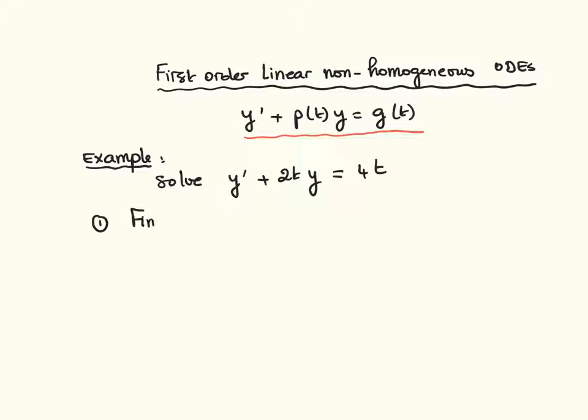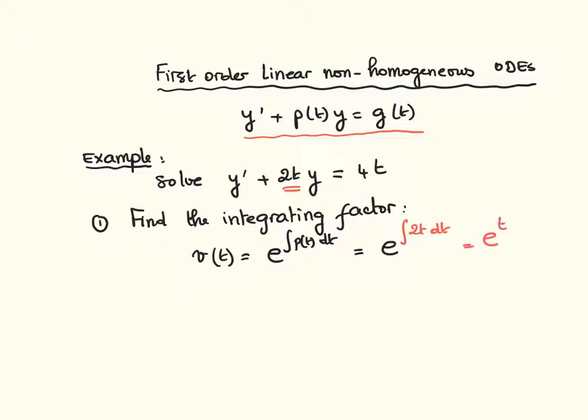First we find what we call the integrating factor, which is v of t, which is the exponential of the integral of p of t dt. So in this particular case, p is 2t here. So it's e to the integral of 2t dt. So it's basically e to the t squared. So this is the integrating factor.